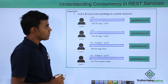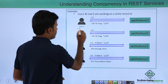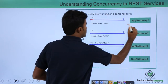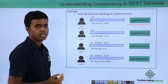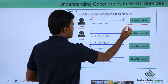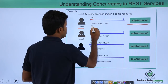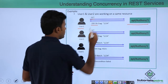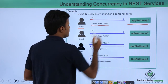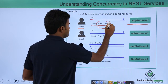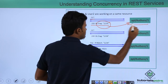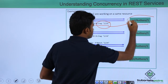User 1 issues a GET request to API/author/1 and the API responds with a message saying 200 OK, successful, along with an ETag. This ETag is a token that is related to this particular resource.